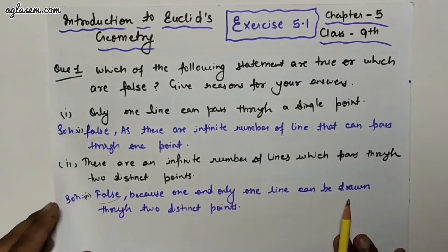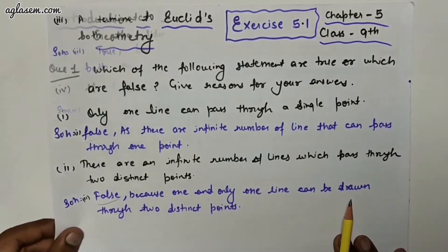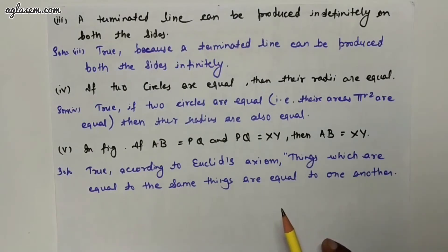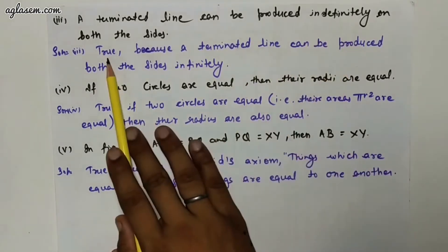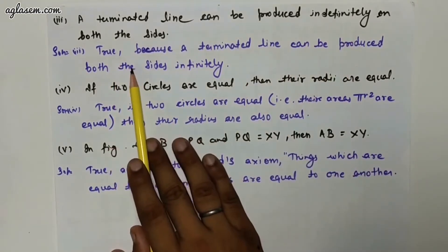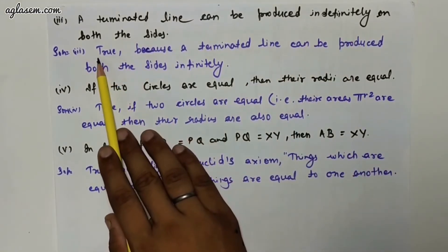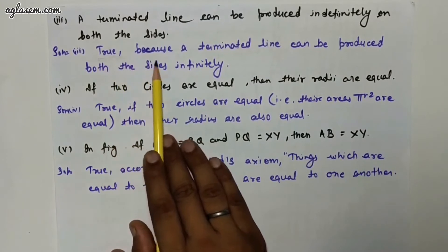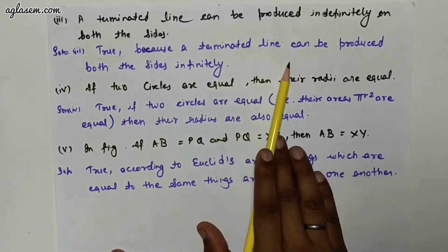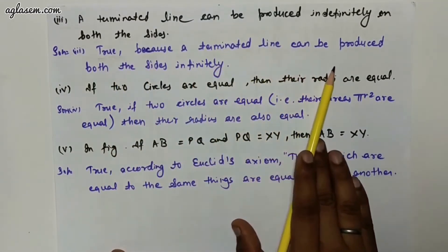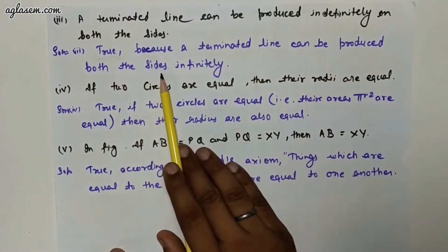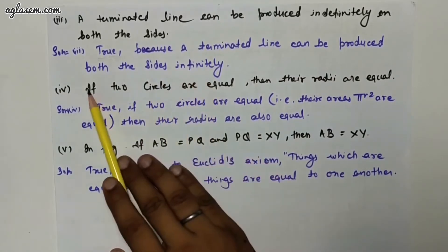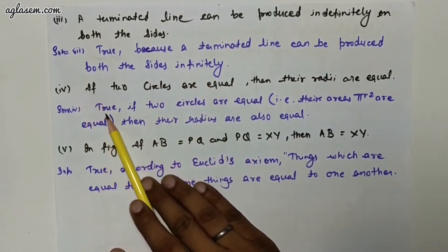The third part says: a terminated line can be produced indefinitely on both the sides. This statement is true, because a terminated line can be produced on both sides infinitely.